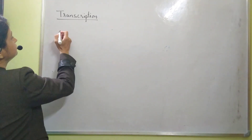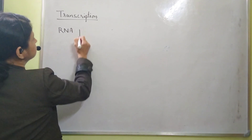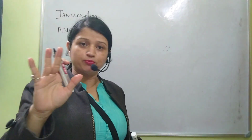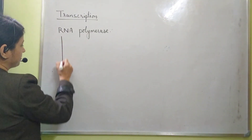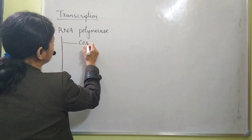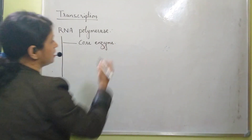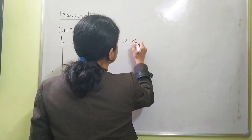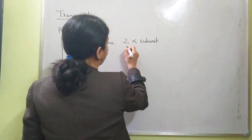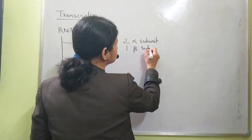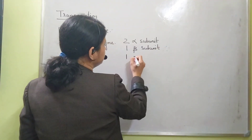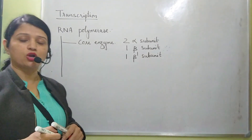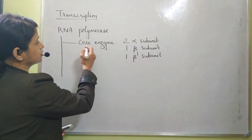RNA polymerase is a complex enzyme and it has three important parts. The first is the core enzyme, which contains four subunits: two alpha subunits, one beta subunit, and one beta-dash subunit. All these subunits are always united together and they constitute the core enzyme.